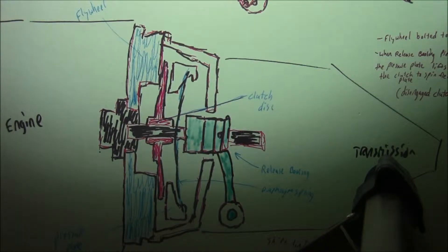Okay, how a clutch works. The purpose of the clutch is to transmit your crankshaft rotation to your transmission to ultimately your wheels.